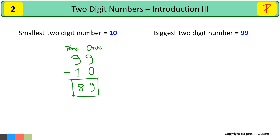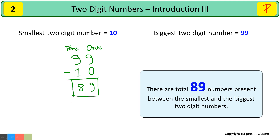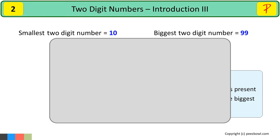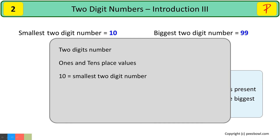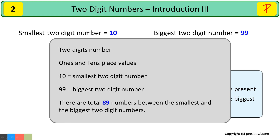This means there are a total of 89 numbers between the smallest and biggest two-digit numbers. Let us summarize what we learned. We saw a few two-digit numbers and that every two-digit number must have digits at the ones and tens places. We also saw that 10 is the smallest two-digit number and 99 is the biggest. We calculated that there are 89 numbers between them. I will teach you more about two-digit numbers in my next videos.